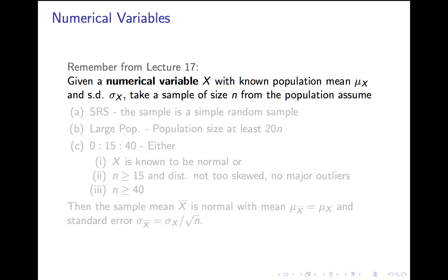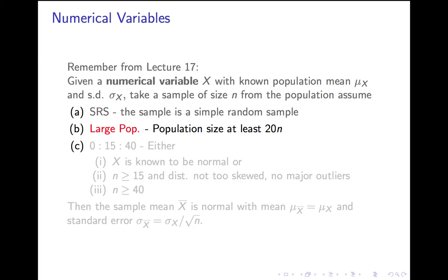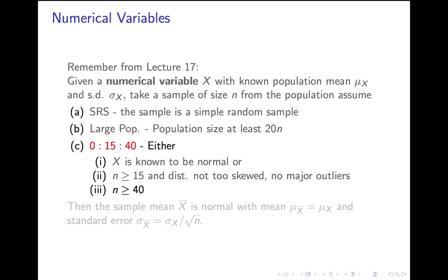Given a numerical variable x, suppose we know the mean of x and we know the population standard deviation sigma x. We take a sample of size n from the population, and remember there were three assumptions: it had to be a simple random sample, the population had to be at least 20 times the sample size, and the 0-15-40 rule had to be true — x normal, n at least 15 and x is not too skewed, or n at least 40. If all those assumptions are met, the sample mean x-bar is normally distributed with mean mu of x and standard error sigma x over the square root of n.